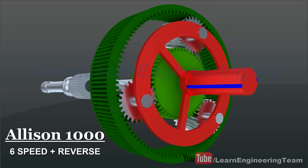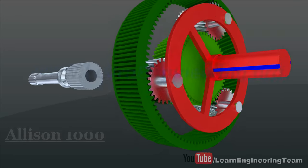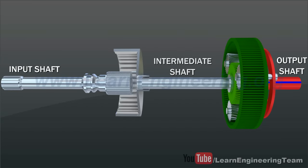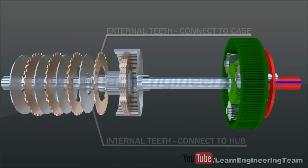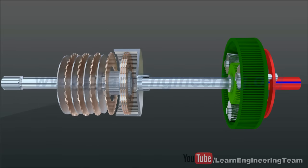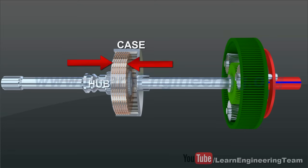In an automatic transmission, there is no direct connection between the input and output shafts. Rather, there is an intermediate shaft between the two. In addition, two clutch packs are used for transmitting power. Pressing the clutch plates together will lock the hub to the case.